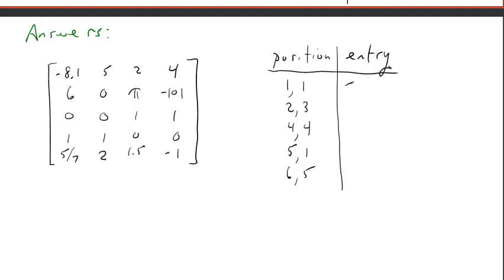Here's the matrix in our positions. The 1, 1 position, first row, first column, that's just negative 8.1. The 2, 3 position, second row, third column, that's just the number pi.